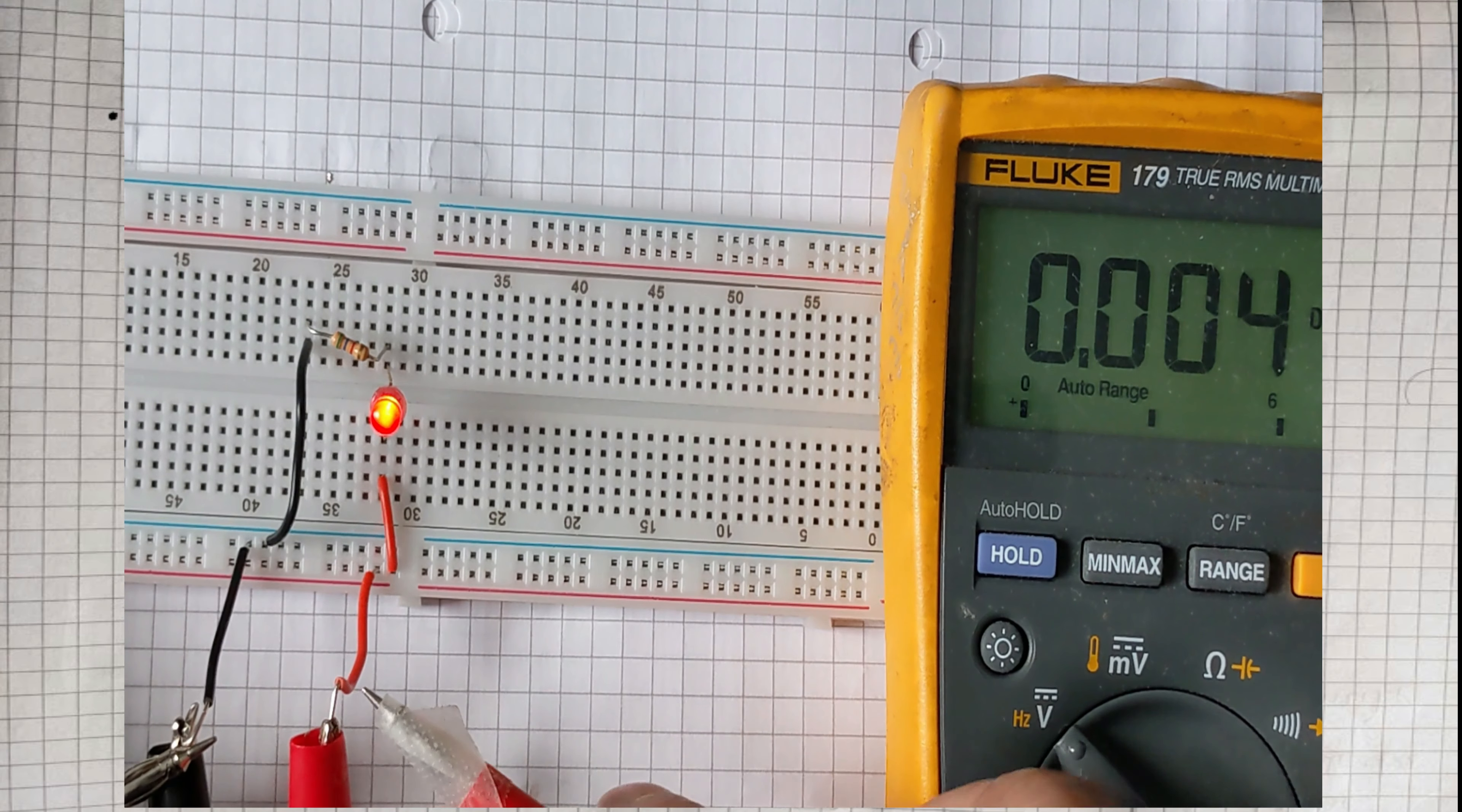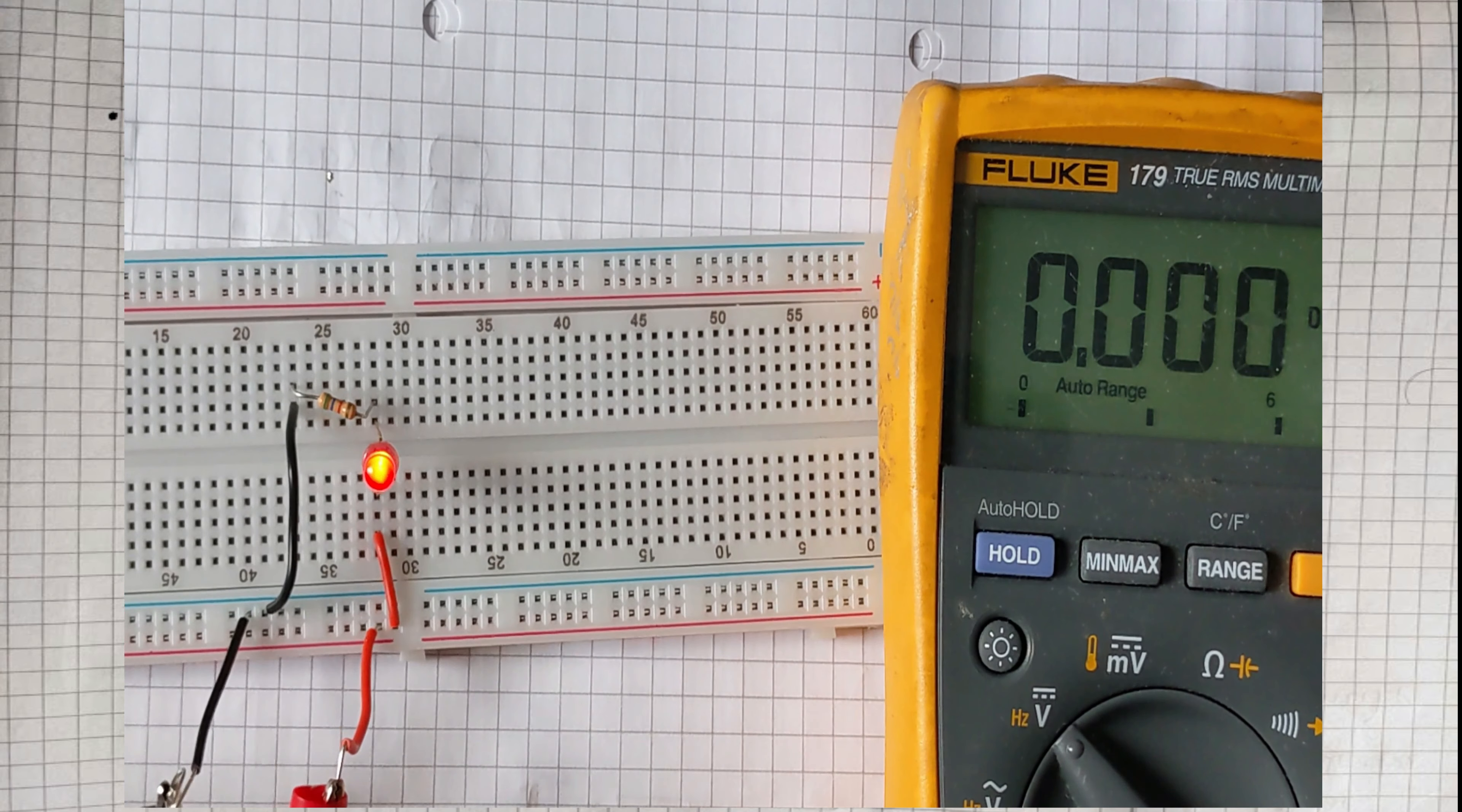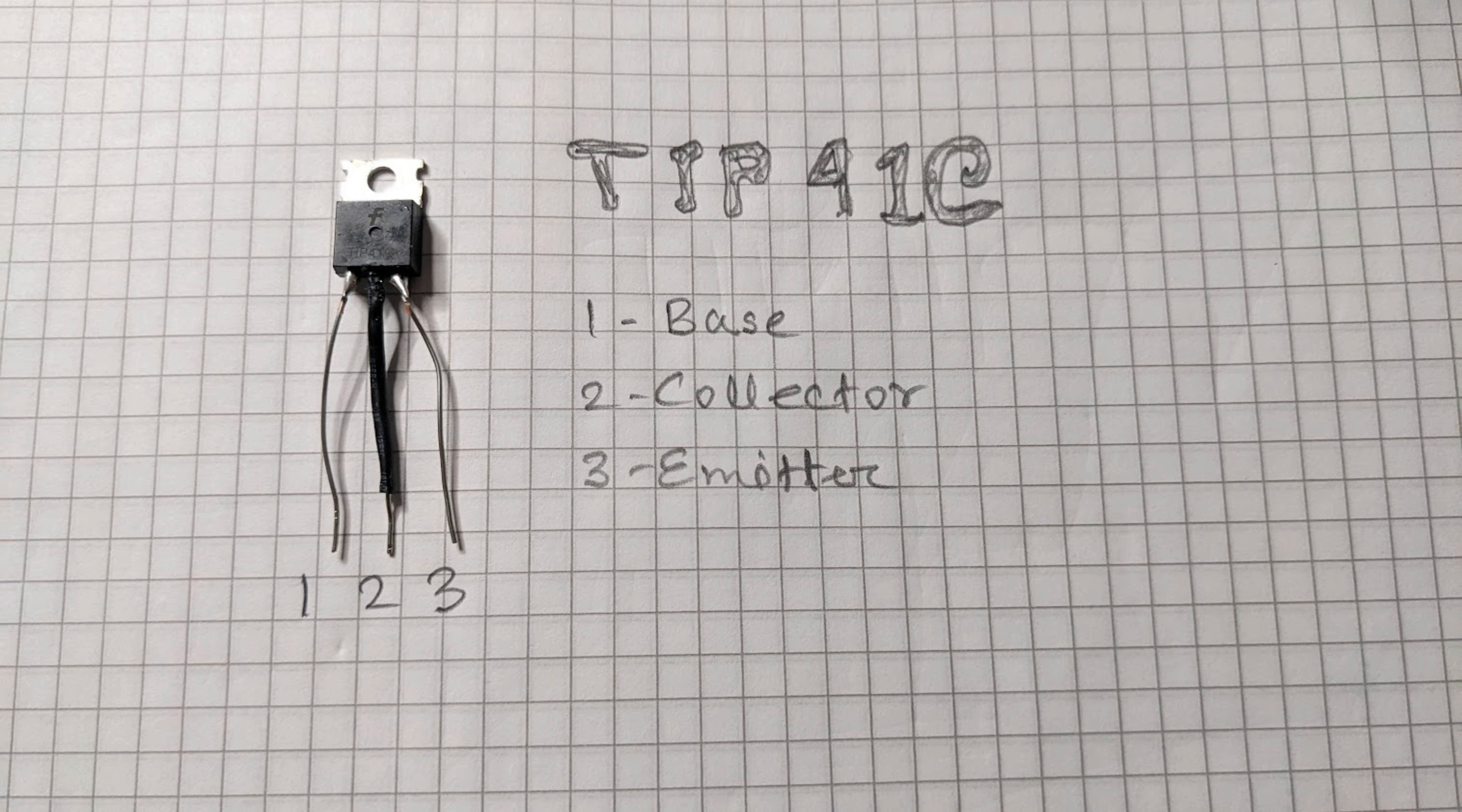Now I'll replace the ground cable with the NPN transistor pin number 3, which is the emitter. Before all this, I would like you to get introduced to my very modified TIP41C transistor.